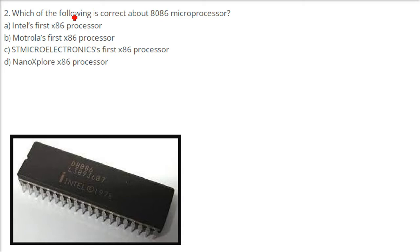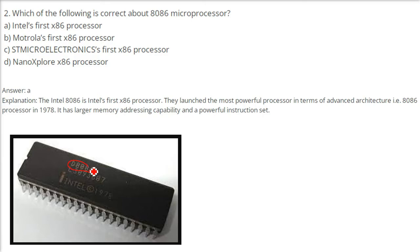Which of the following is correct about the 8086 microprocessor? You can see '8086' and the year 1978, and Intel is also written. This is the Intel 8086 — Intel's first x86 processor. Intel launched this advanced-architecture 8086 processor in 1978. It has larger memory capability, interesting features, and a powerful instruction set. The answer is Intel's first x86 processor.